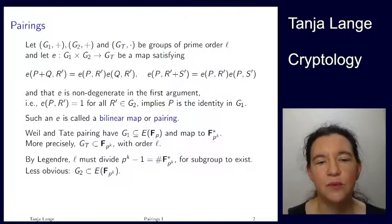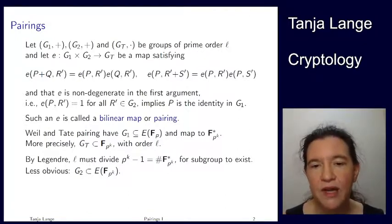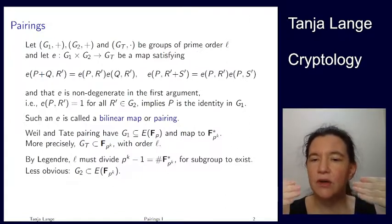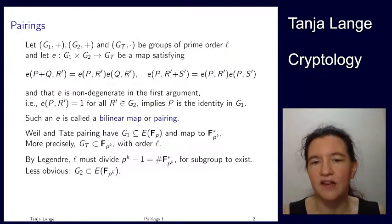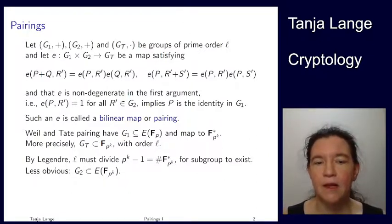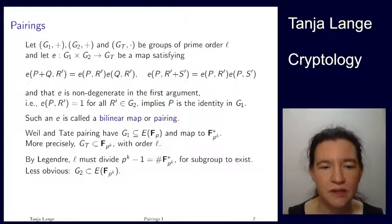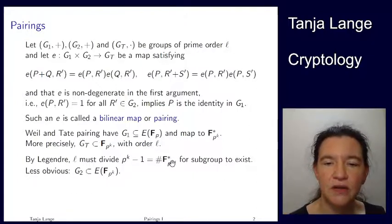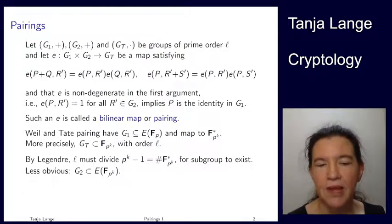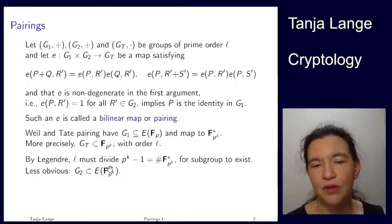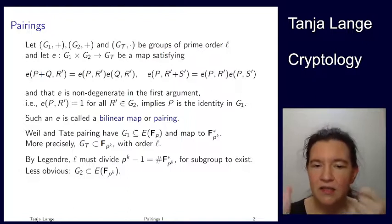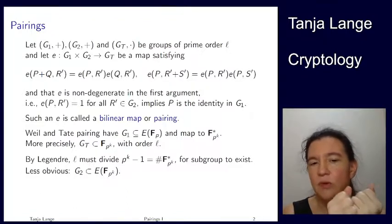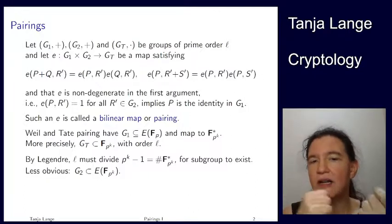And then within that, it's a subgroup of order L. Now Legendre tells us that if we want to have a subgroup of order L, the order of any subgroup has to divide the order of the full group. Now the order of the full group is p to the k minus 1. That's how many elements there are in Fp to the k star. So L must be a divisor of p to the k minus 1. Less obvious is that G2 is defined over the same field. So once you have a k which is large enough so that L divides p to the k minus 1, then we also find a G2 in the elliptic curve points over p to the k. So that is a separate group. G2 are elements that only overlap onto infinity with the G1 group.